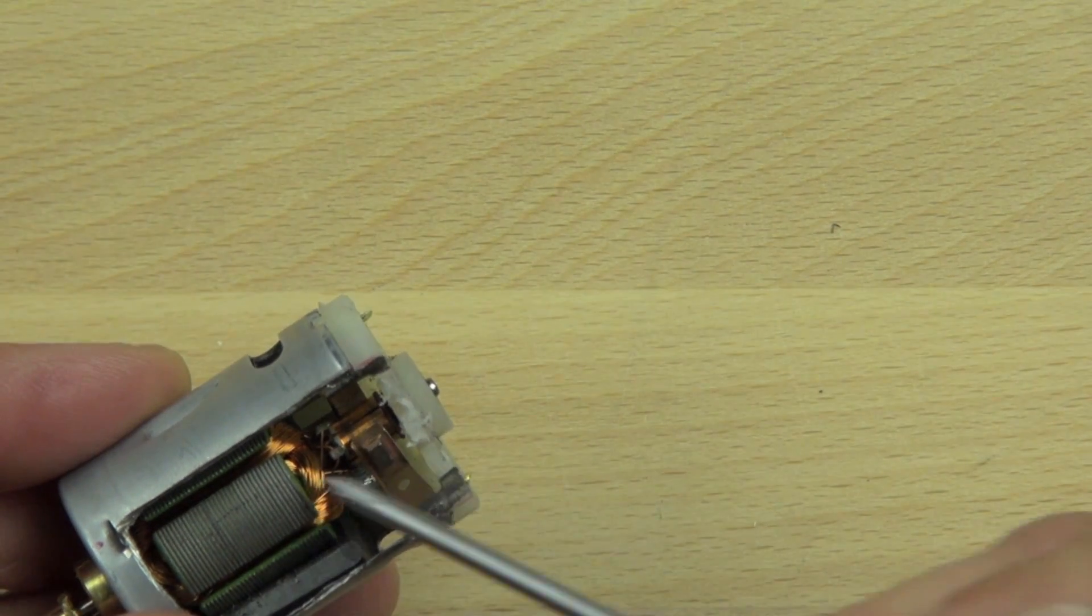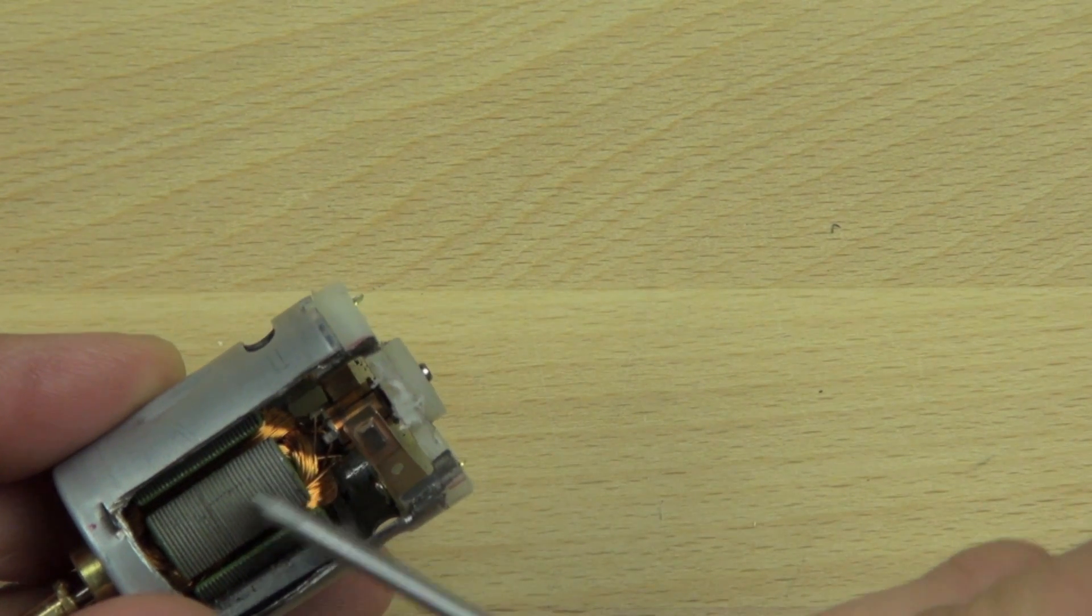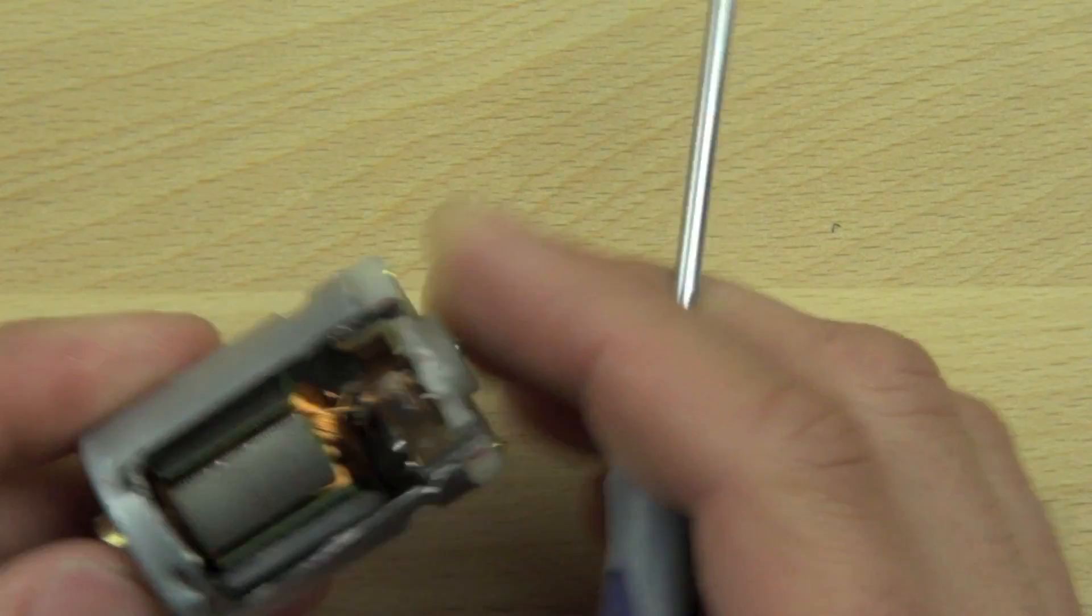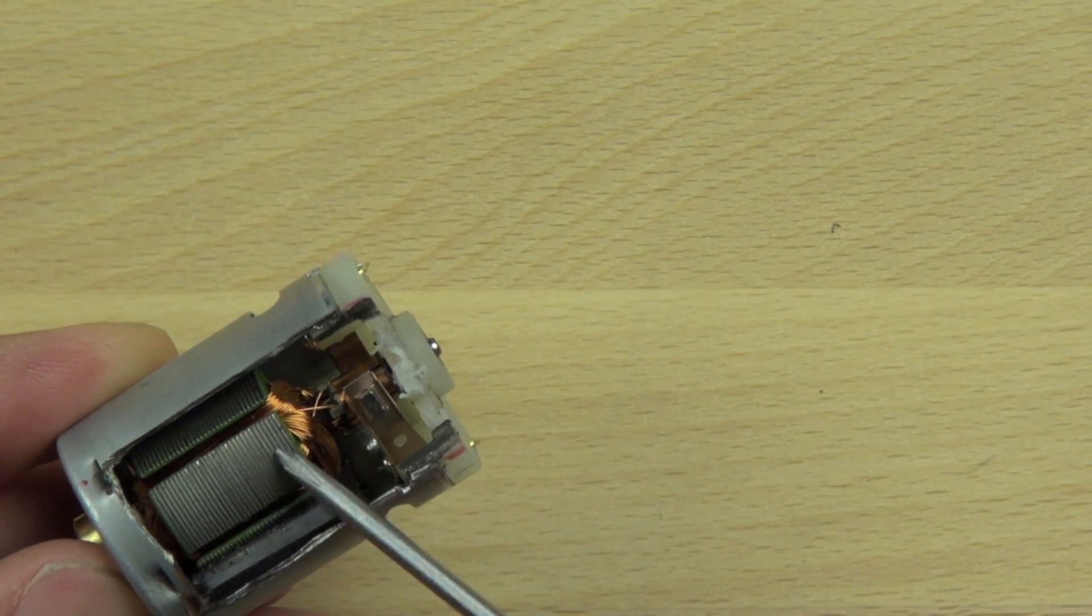So here's a permanent north pole magnet on this side and a permanent south pole magnet on the other side. So when the power flows through each one of these poles, they're called field poles or motor poles.